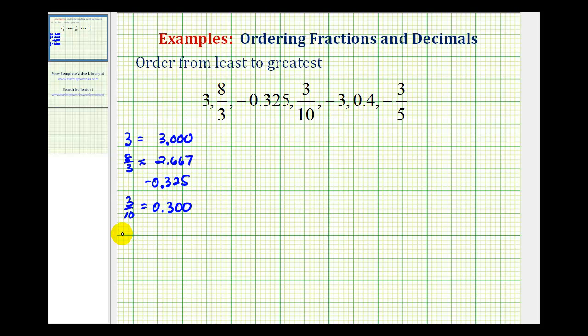Then we have negative three, which would be negative 3.000. Then we have 0.4, which we'll write as 0.400.